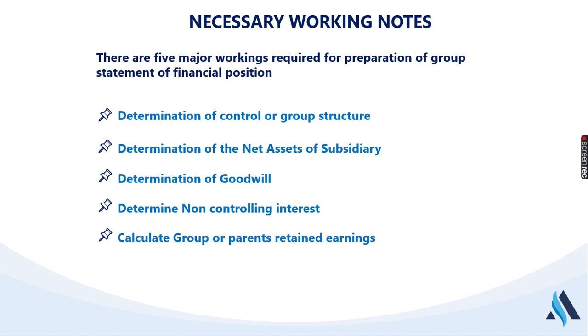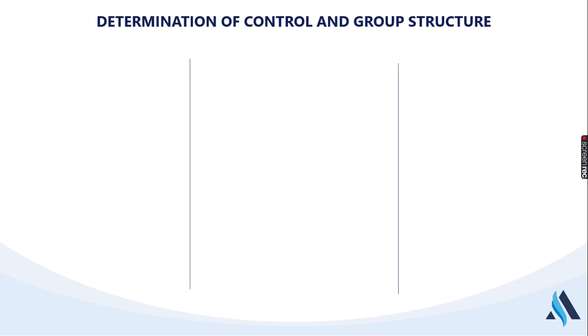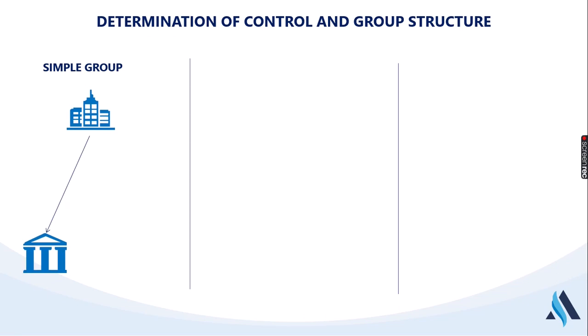Let us look at these one by one. The first working is how to determine control or group structure. For financial reporting and examination purposes, we establish control by looking at the parent company having more than 50 percent in the subsidiary company. In many cases we have what we call a simple group, where the parent company owns more than 50 percent in the subsidiary — for example, 75 percent. Once I establish that the parent owns more than 50 percent of the equity share capital in the subsidiary, I can establish the need to prepare group financial statements.